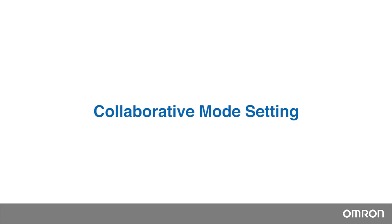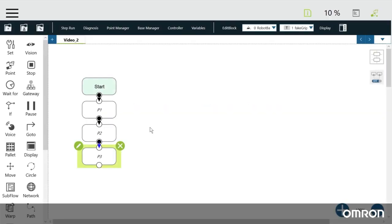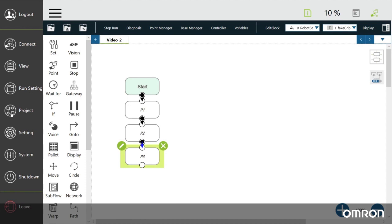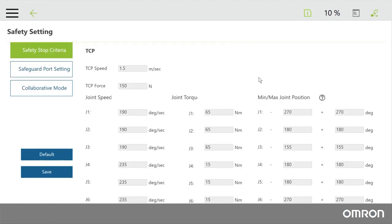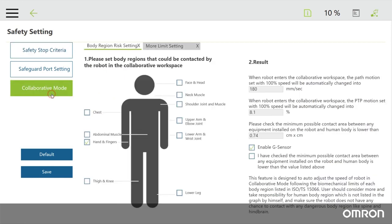Collaborative Mode Setting. Next, let's talk about adjusting the settings in Collaborative Mode. You can adjust the settings of Collaborative Mode by going to Menu, Setting, and Safety. Click on the Collaborative Mode Setting button to set up the maximum speeds and torques for the individual joints. The Collaborative Mode Setting is divided into two parts.